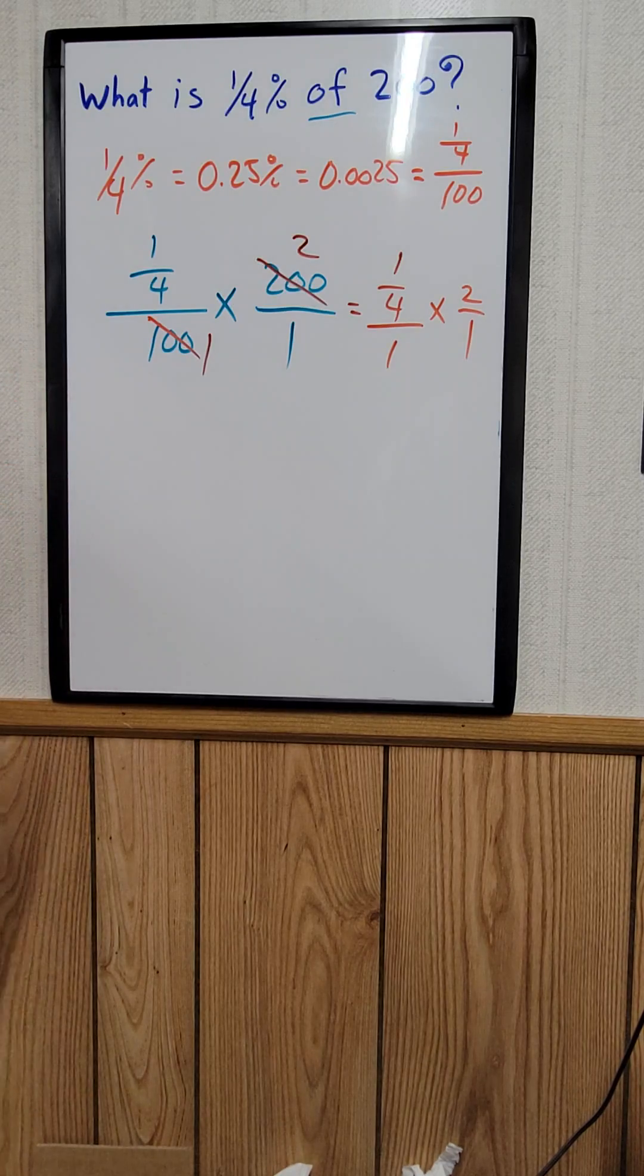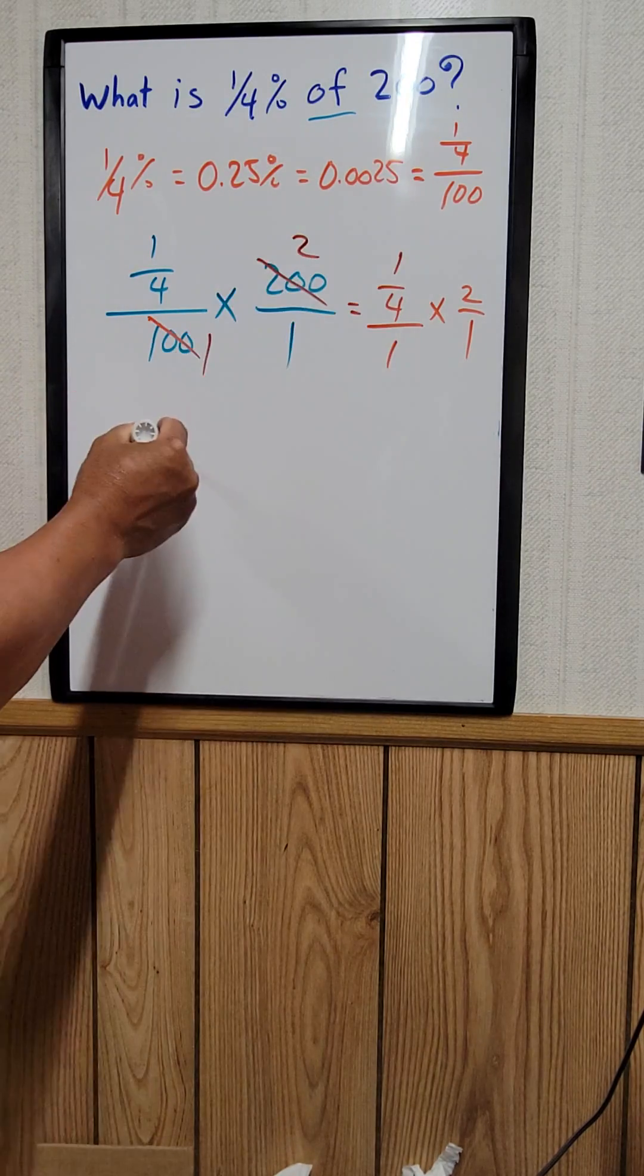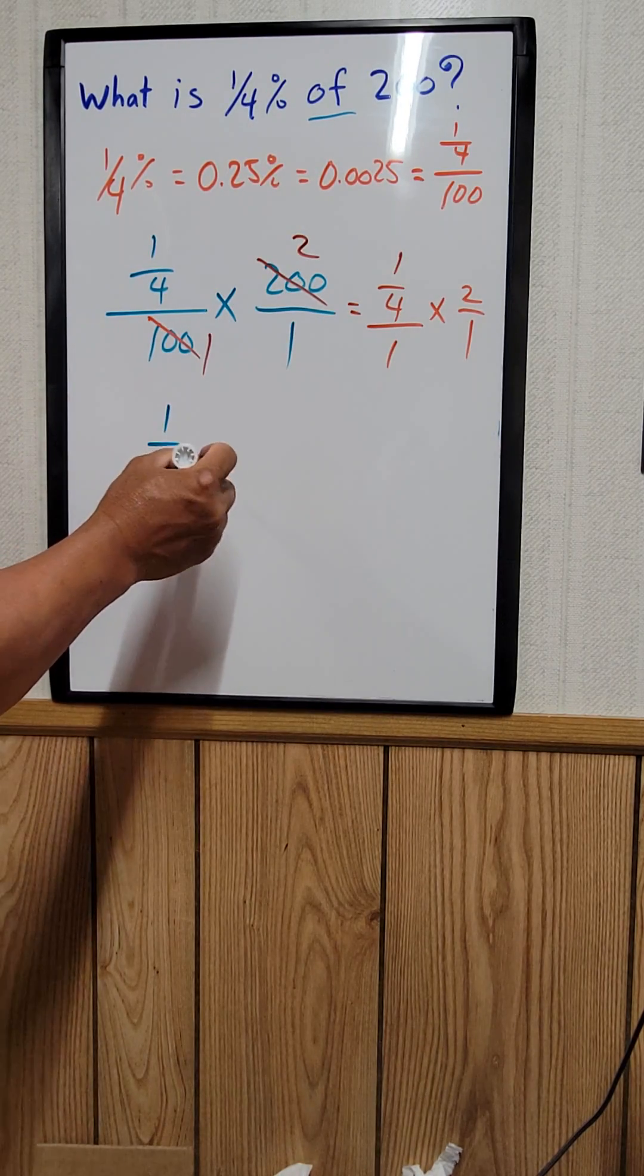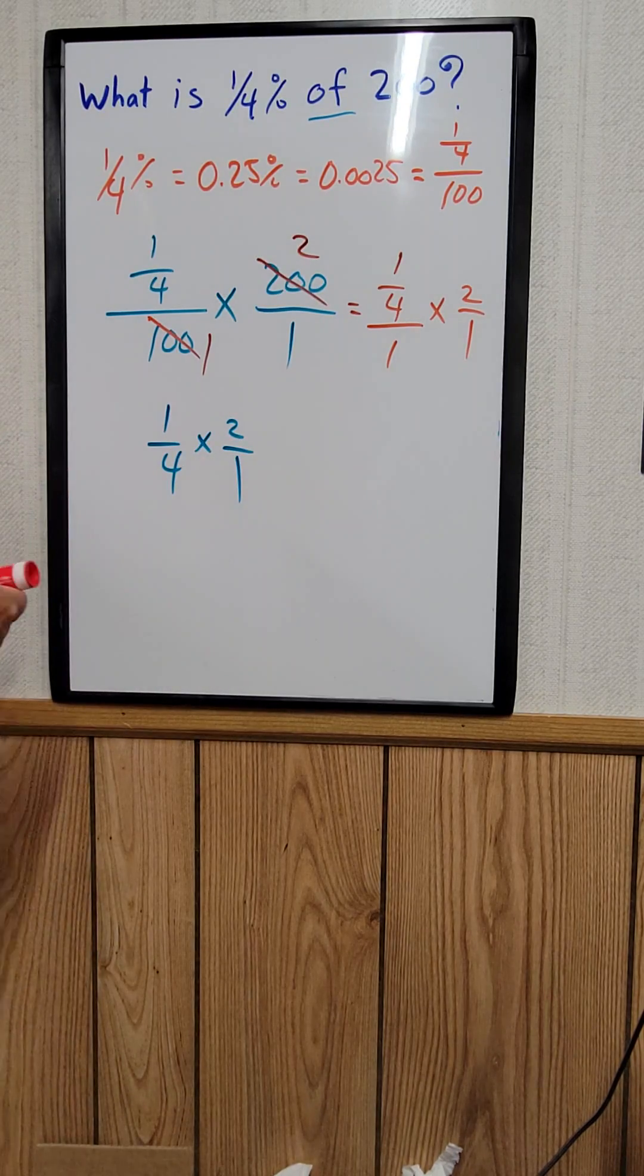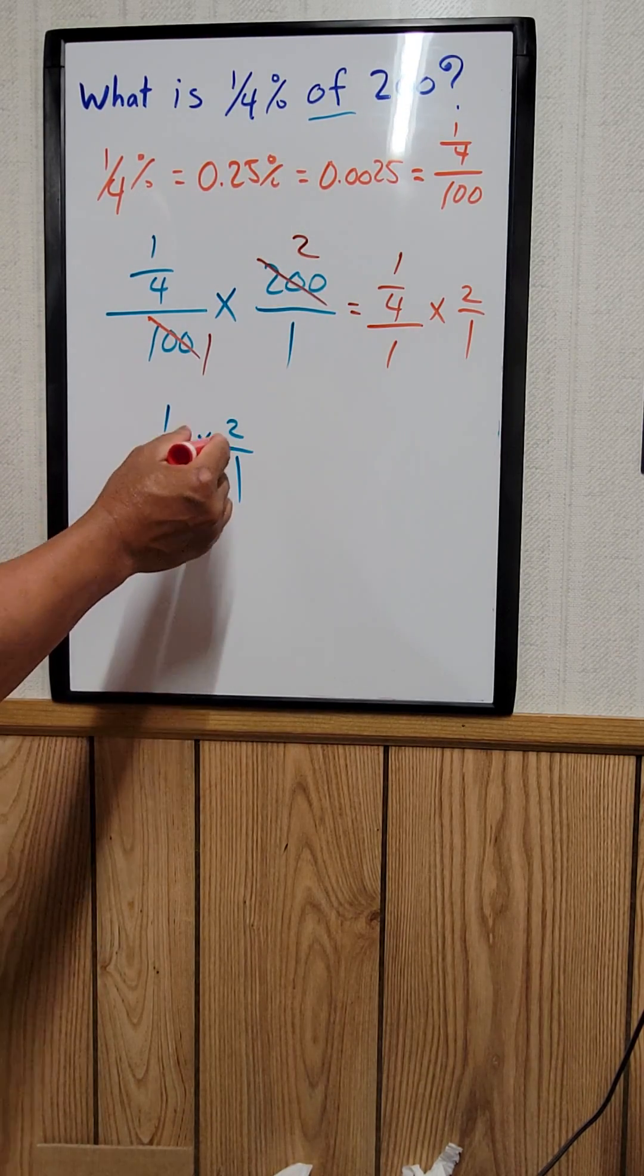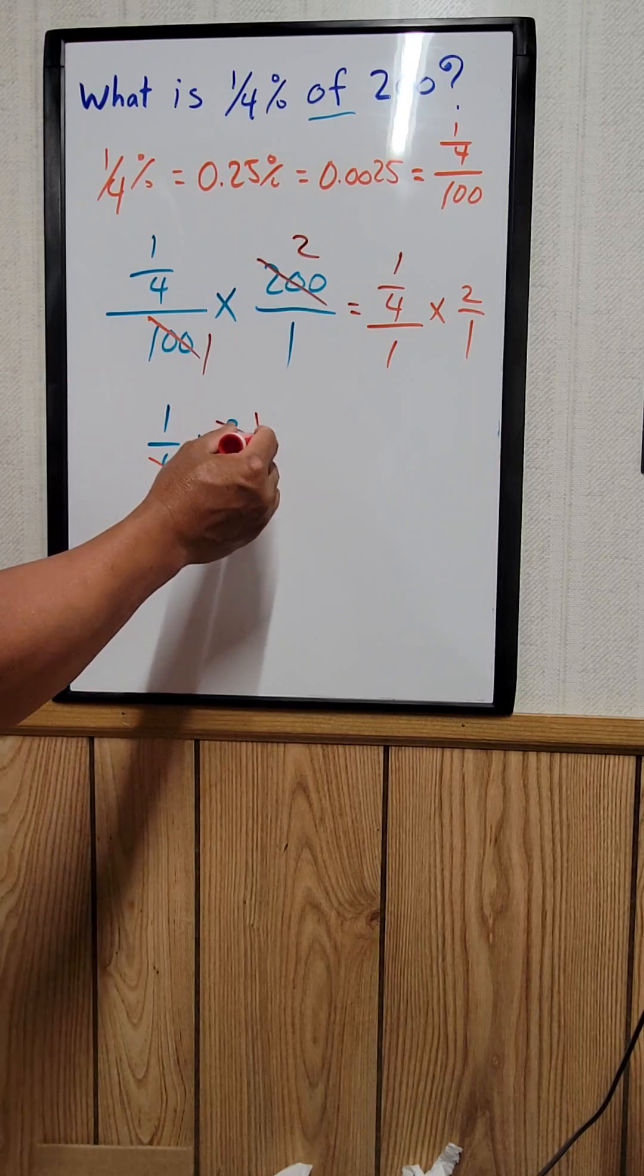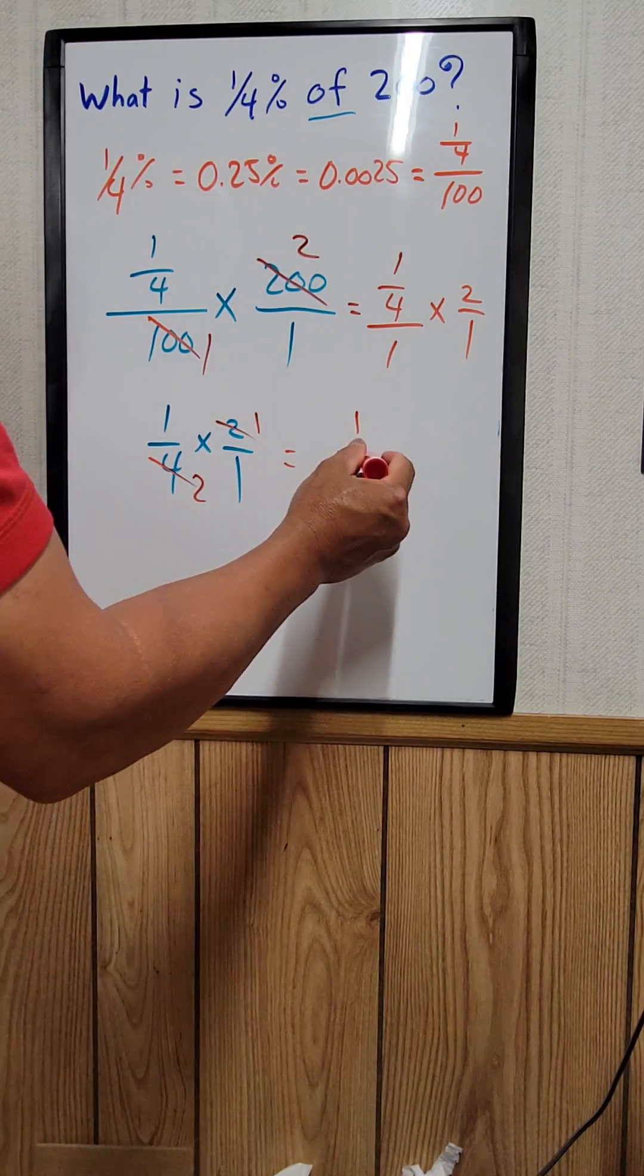And that's the same thing as saying one over four times two over one. And we can use cross-cancellation again. Two and one. So the answer is one half.